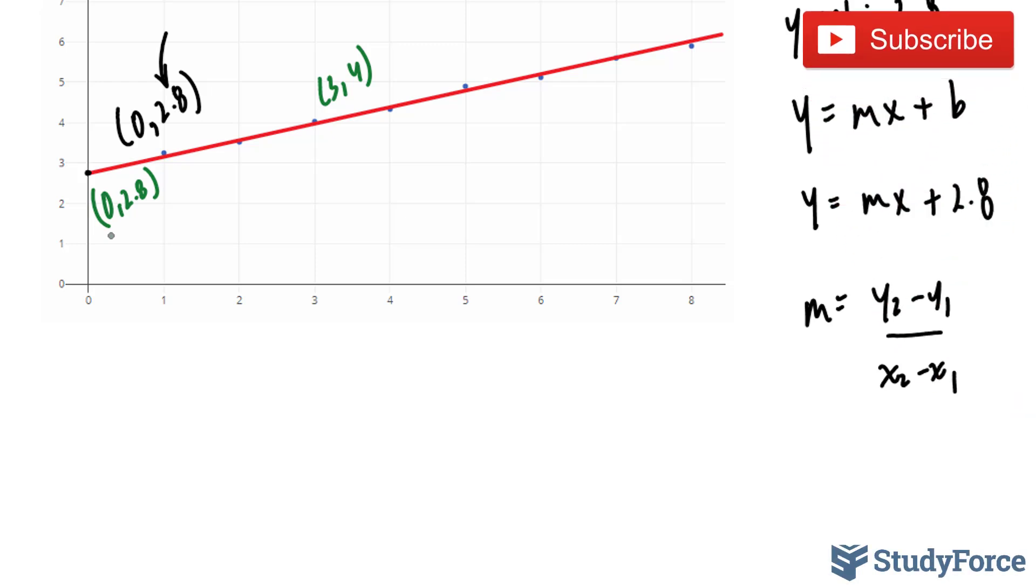So to find the slope, we can do rise over run where going from this point to this point, the x-coordinates 0 to 3 is 3. So the run is 3, whereas the rise is from 2.8 to 4. We can subtract to get 4 minus 2.8, which gives us 1.2. So this represents our rise and this represents our run.